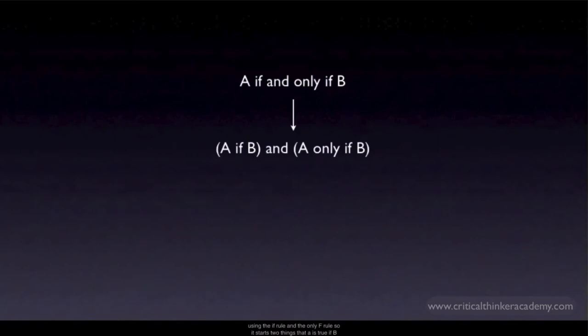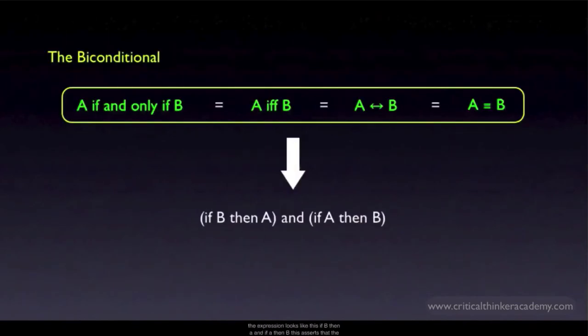So it asserts two things: that A is true if B is true and that A is true only if B is true. You can use the if rule and the only if rule to translate these into standard conditionals. When you do, the expression looks like this: if B then A and if A then B. This asserts that the conditional relationship runs both ways.